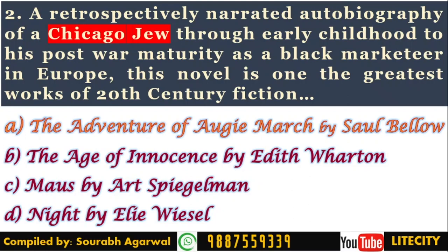Maus is a graphic novel in which Spiegelman interviews his father about his experiences as a Polish Jew and Holocaust survivor. Night by Elie Wiesel is based on his own Holocaust experiences with his father in Nazi concentration camps. Edith Wharton's The Age of Innocence is a coming-of-age story unrelated to war. So three of these four novels are related with war or Holocaust trauma.